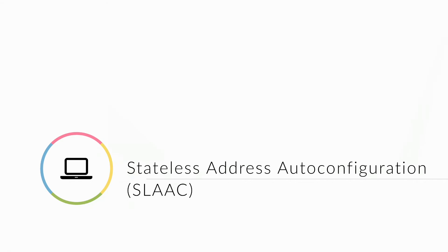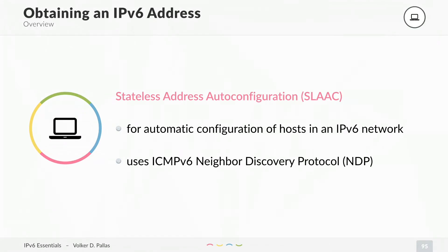Let's look at the details of the stateless address auto-configuration feature of IPv6. It can be used for the automatic configuration of hosts, which you had to use DHCP with IPv4 before — you don't have to do that anymore. It is completely reliant on the ICMPv6 Neighbor Discovery Protocol.